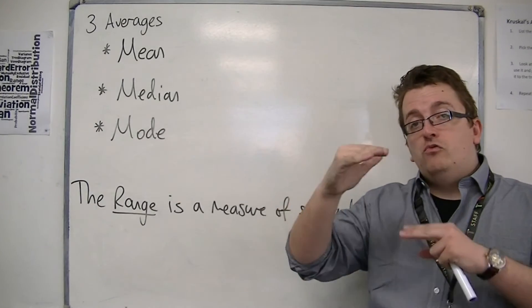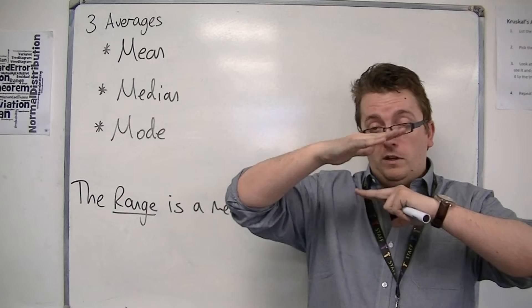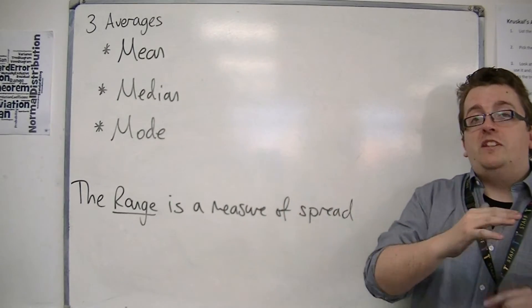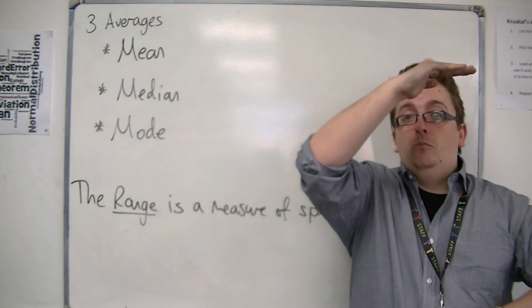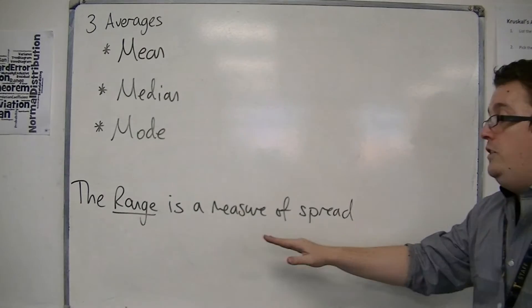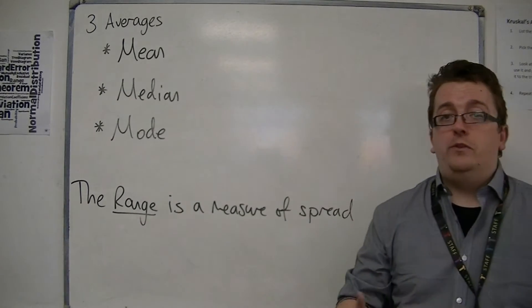So all of his scores are closer together and more tightly packed. If the range is larger, the data is more spread out and less consistent. So the range is a measure of spread that we use.